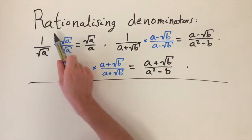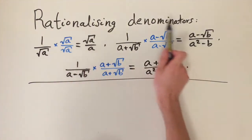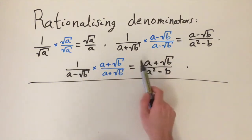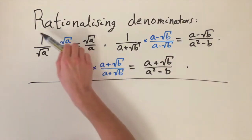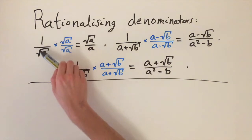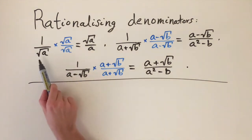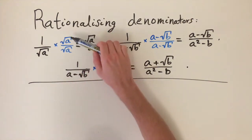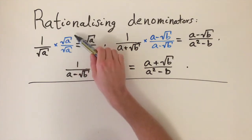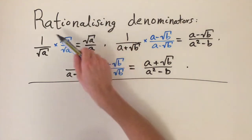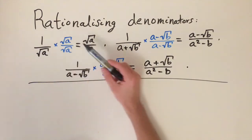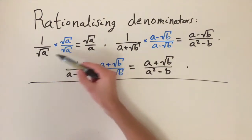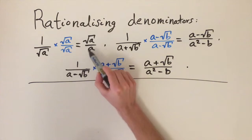Today we're going to be looking at rationalizing denominators with an irrational part. I've got three formulas up here. For the first one, if we have a number of the form 1 divided by the square root of a, what we do is multiply top and bottom by the square root of a. Because these are the same numbers, we're essentially multiplying by 1, so we're not changing the value of this fraction. The square roots on the bottom cancel out, so we get a on the denominator.